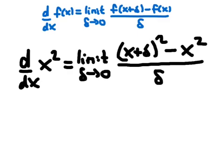At this stage we might ask why we can't just set delta to zero straight away. The answer is clear: if delta were zero, the numerator would be x squared minus x squared, giving zero, and the denominator would also be zero, so we'd have zero over zero, which is ambiguous. What we must do is manipulate the numerator to extract a power of delta which will cancel with the delta in the denominator, making it safe to take the limit and obtain our result for the derivative.